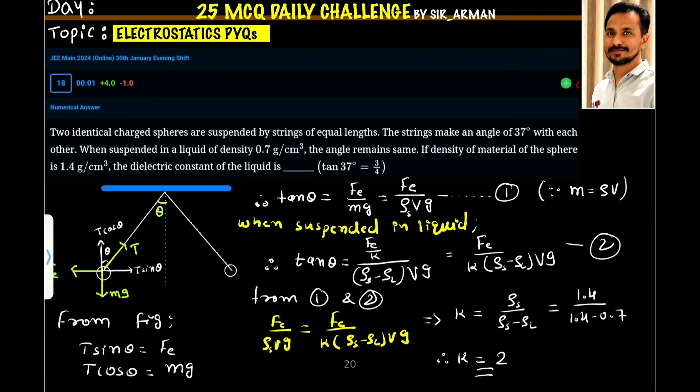Two identical charged spheres are suspended by strings of equal length. The strings make an angle of 37° with each other. When suspended in a liquid of density 0.7 g per cm³, the angle remains the same. If the density of the material of the sphere is 1.4 g per cm³, find the dielectric constant of the liquid.